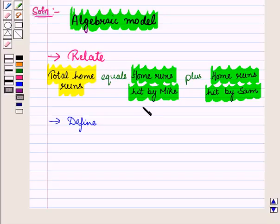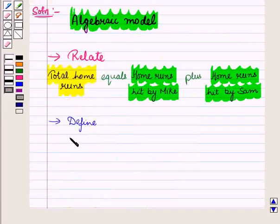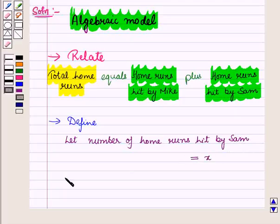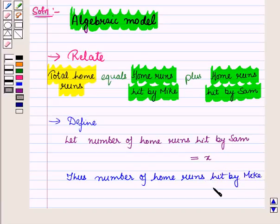Now we define what is given to us. The unknown is the number of home runs hit by each player. We are given that Mike hit 8 more home runs than Sam. So let the number of home runs hit by Sam be equal to X. Thus the number of home runs hit by Mike is equal to X plus 8.